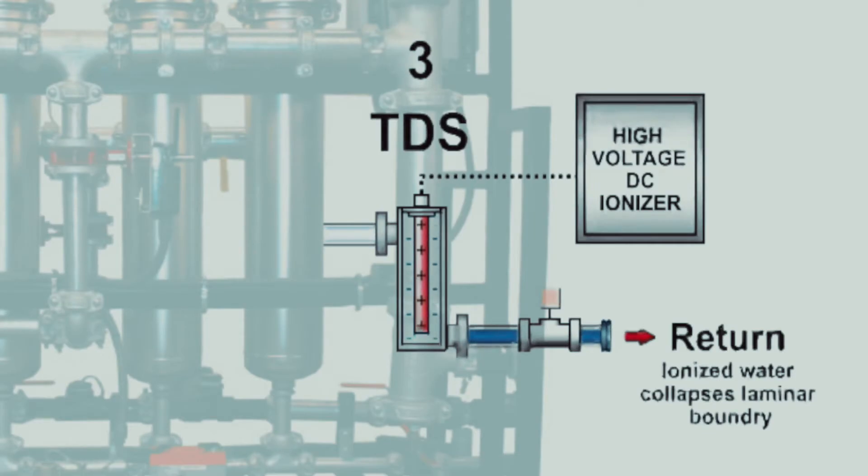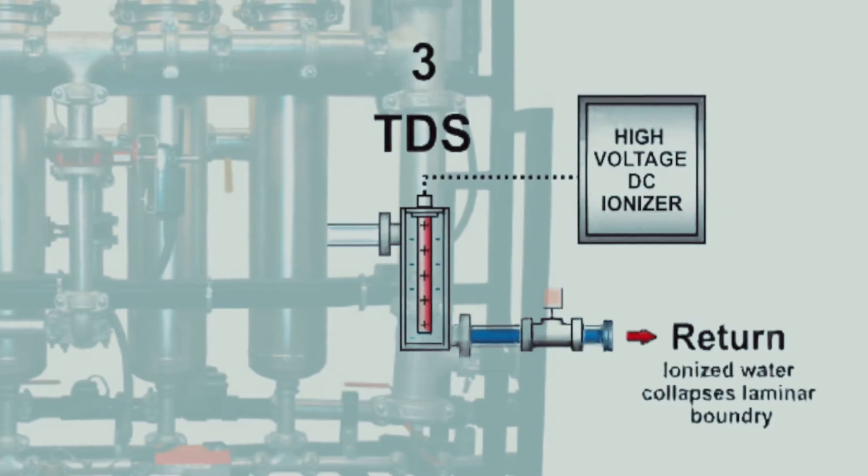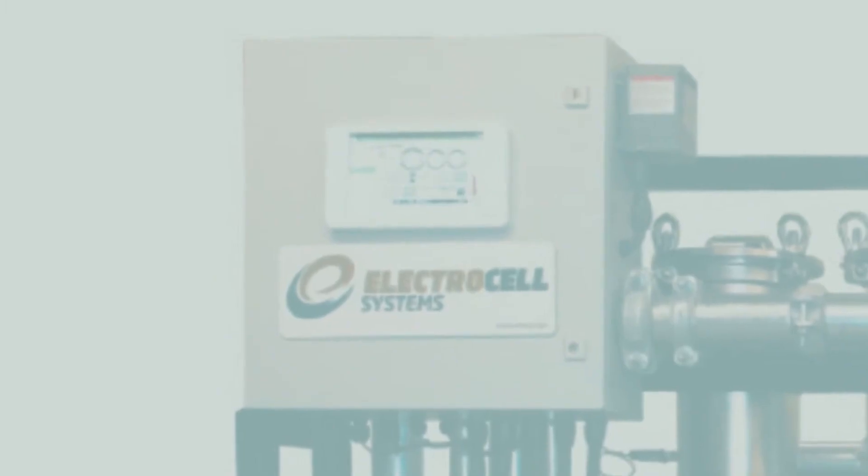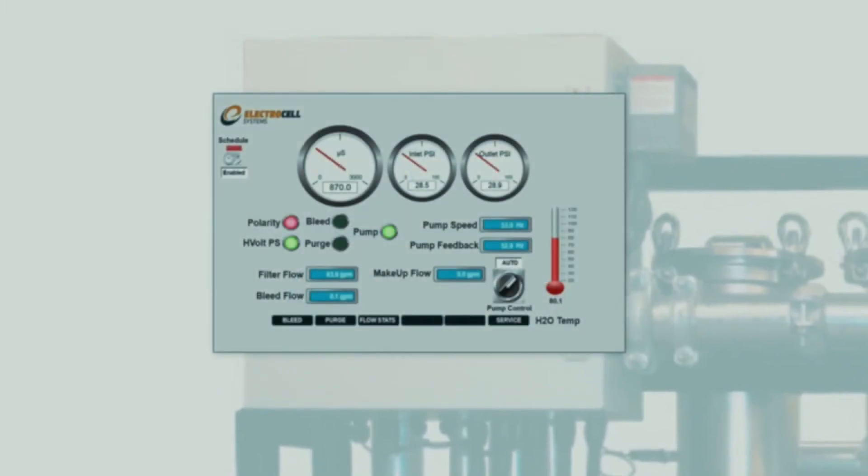The ElectroCell system's touchscreen monitor is user-friendly and fully automated. It includes alarms, trending graphics, controls, and flow totalizing, which can be integrated into your BACnet, LAN, or Modbus network.